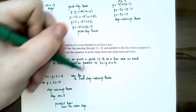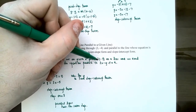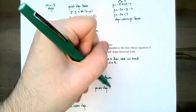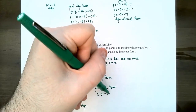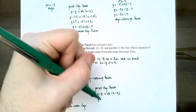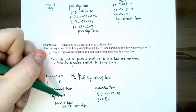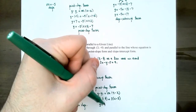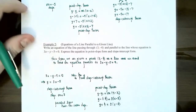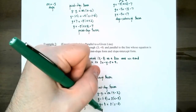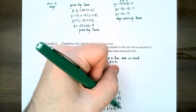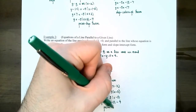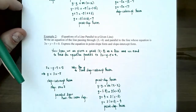We have the point three, negative four on the line we are trying to find, and the slope must be three. Using point-slope form: y minus y₁ equals slope times x minus x₁. So y minus negative four equals three times x minus three. Simplifying: y plus four equals three times x minus three. Subtracting four from both sides: y equals three times x minus three, minus four. This is point-slope form.